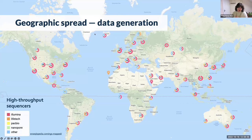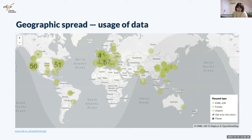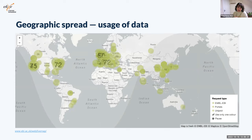The geographic spread of data generation is also a big challenge — it is increasing every year. You can see here the distribution of sequencing machines globally from Illumina, Life Tech, PacBio, and Nanopore, and this only applies to sequencing data. Unlike all the disciplines where data is generated from single sites or a small number of sites, in the life sciences, data is generated really across the globe with no spot left untouched. And obviously there's also usage of data — this geographic spread is not just about generating, it's about using it, as shown in this live map from EMBL-EBI indicating uses of data across the entire globe.